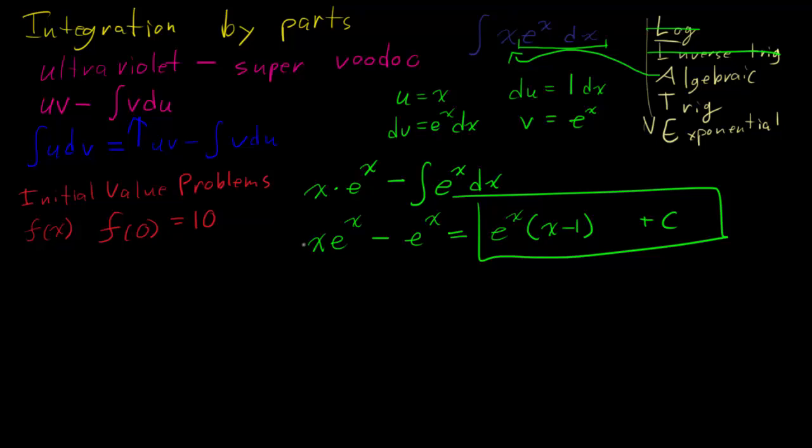So, if I say that when x is 0, f of 0 equals 10 equals e to the 0 times 0 minus 1 plus c. And now I can solve for c, and I have 10 equals 1 times negative 1 plus c, which gives me 11 equals c. And then I plug c back into the original equation, and I get e to the x times x minus 1 plus 11 equals f of x.